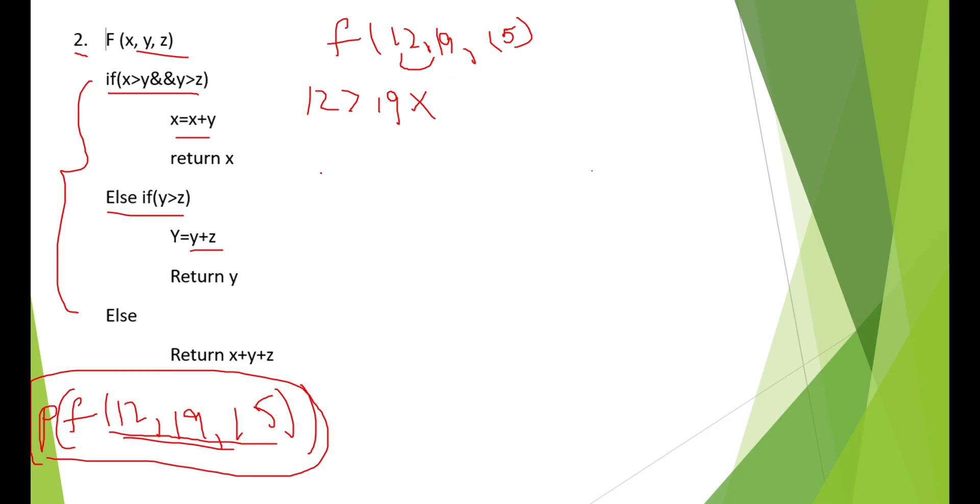Next, else if. You just need to check if y is greater than z. Is 19 greater than 15? Yes, it is true. Just execute this operation. It is y is equal to y plus z, which is nothing but y is equal to 19 plus 15. So, 34.